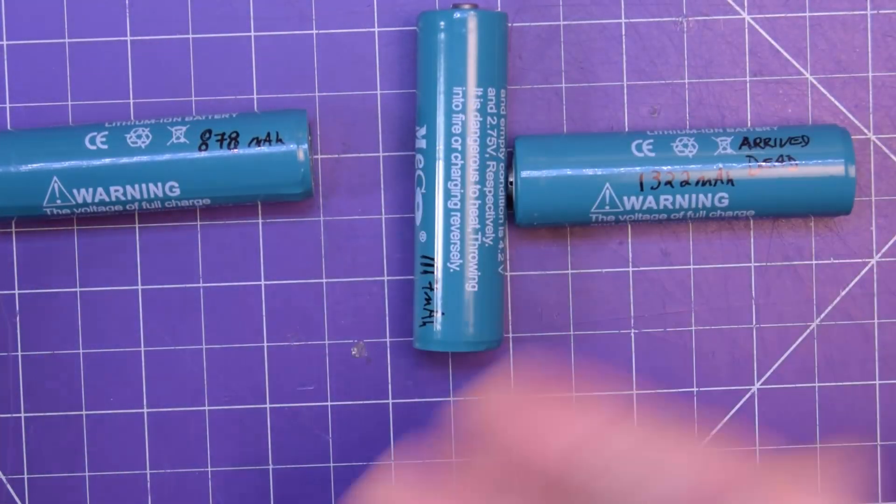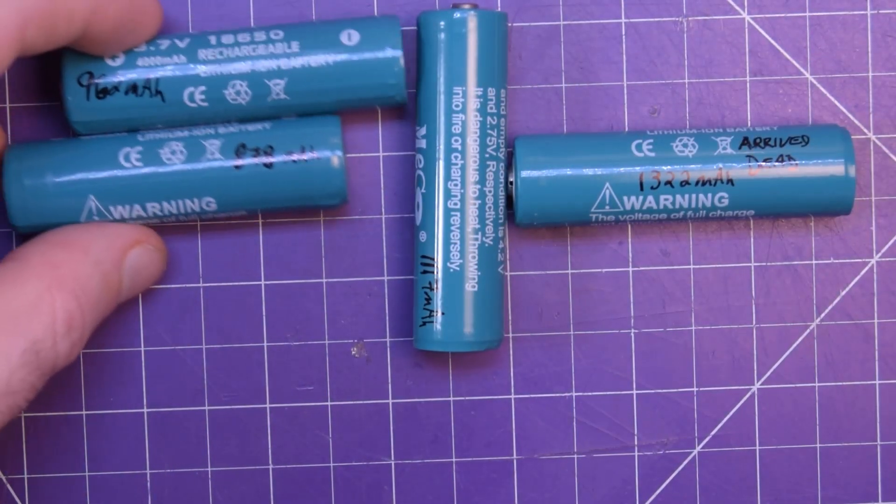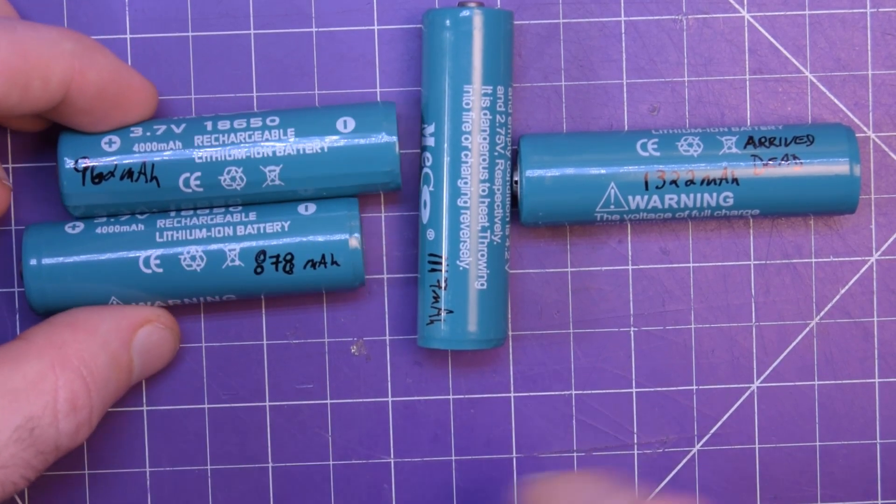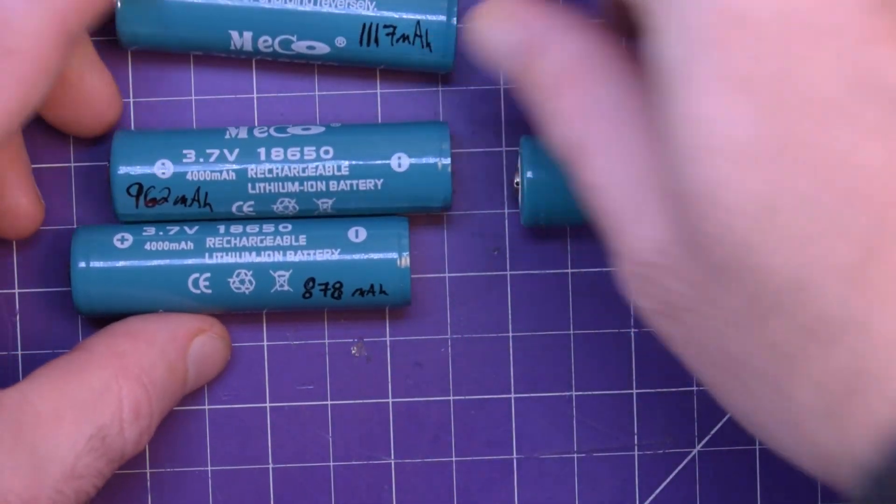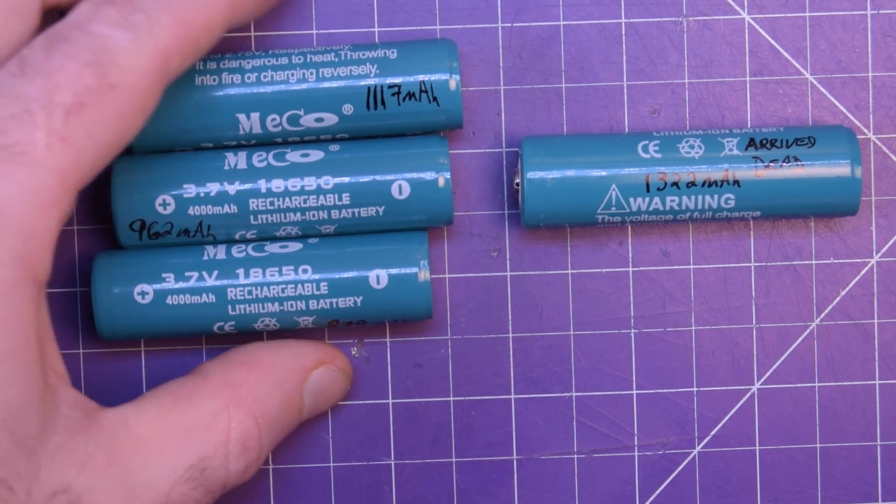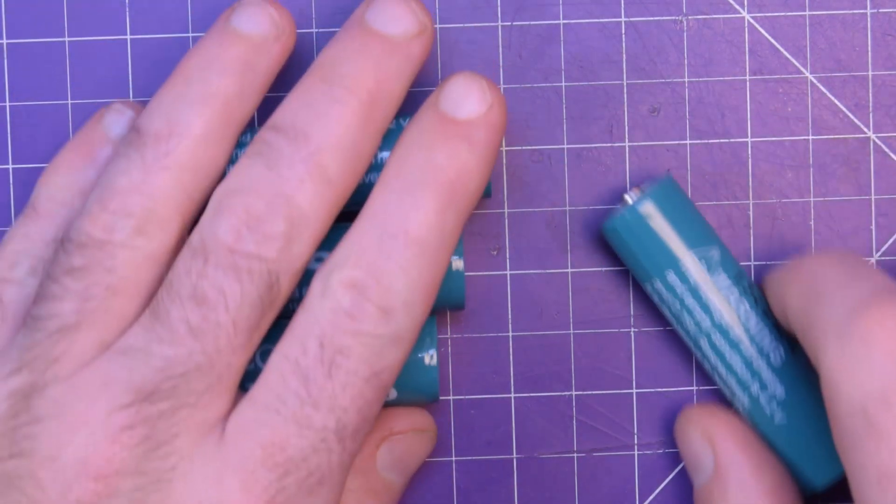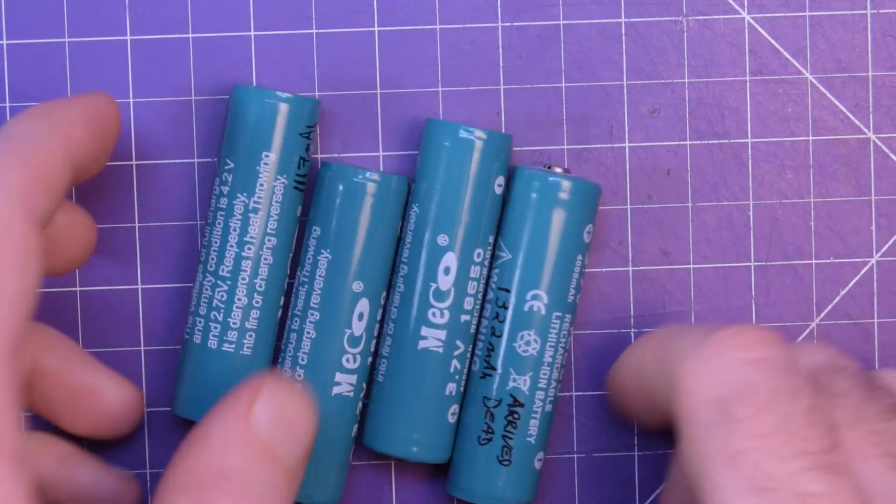Now because I had some weird results, I checked the other cells. I got 962 milliamp hours and 1,117 milliamp hours. So yeah, these cells are trash.